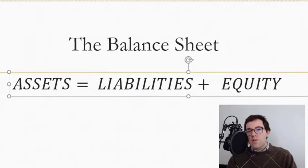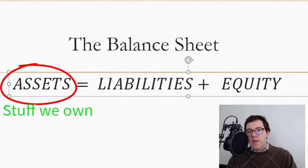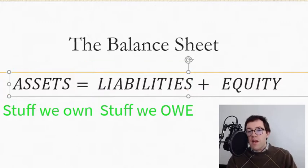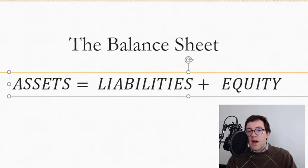The balance sheet is one of the four financial statements and it tells you a company's financial position at a given point in time — the company's assets, their liabilities meaning what they owe, and the remainder which is equity. When you want to assess a company's creditworthiness, one thing you often want to do is compare the size of their liabilities to the size of their assets.